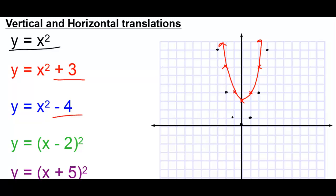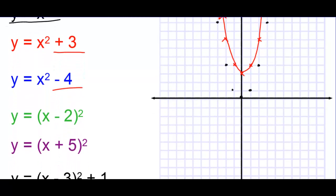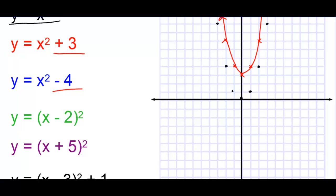Now minus 4 on the outside — all of these original points are going to move down 4. So we have this parabola shifted down 4 for y equals x squared minus 4.